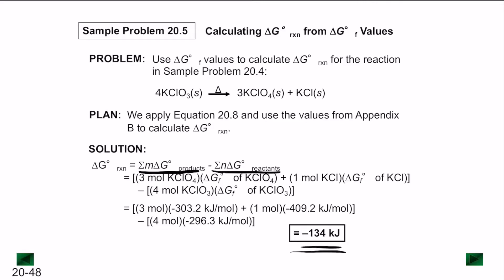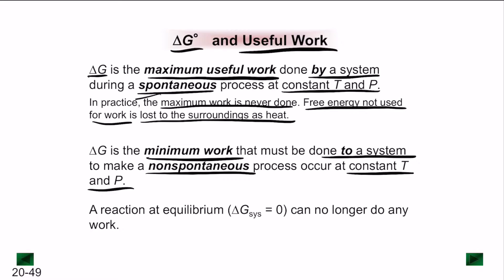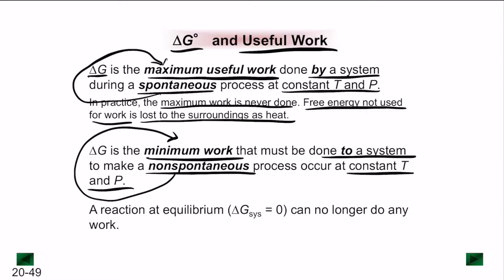Delta G is the representation of the maximum useful work that can be done by a system during a spontaneous process at constant temperature and pressure. In practice, the maximum work is never done because free energy not used for work is generally lost to the surroundings as heat. Delta G is also the minimum work that must be done to a system to make a non-spontaneous process occur at constant temperature and pressure.